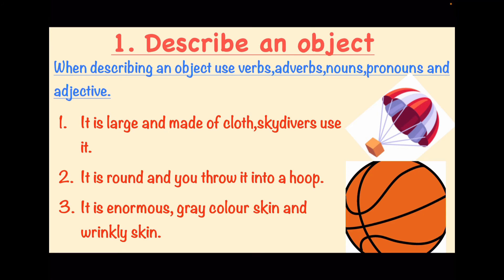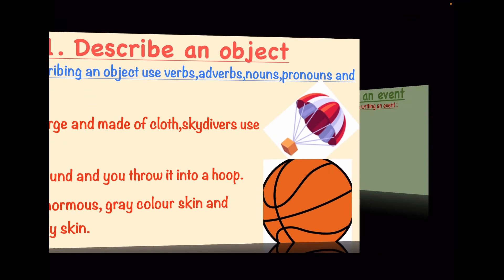2. It is round and you throw it into a hoop. 1, 2, 3, 4, 5 — it's a basketball, because it's round and you throw it into a basketball hoop. 3. It is enormous with gray, wrinkly skin — it's an elephant, because elephants are enormous and have gray-colored skin.